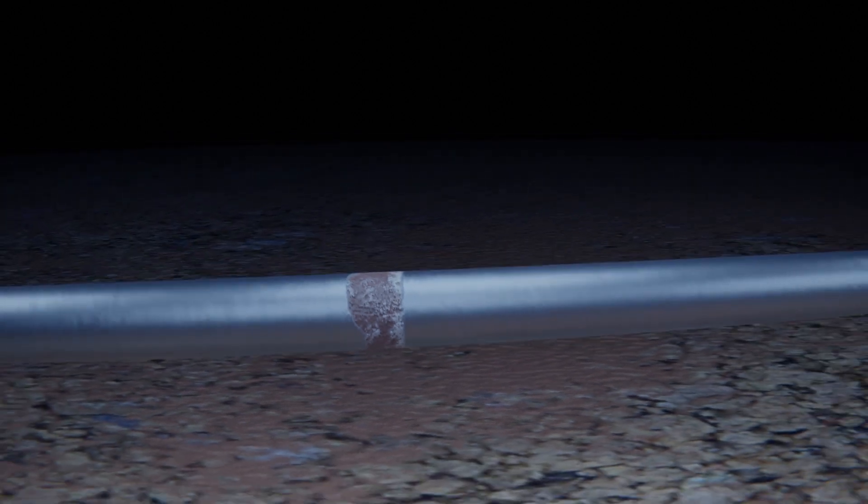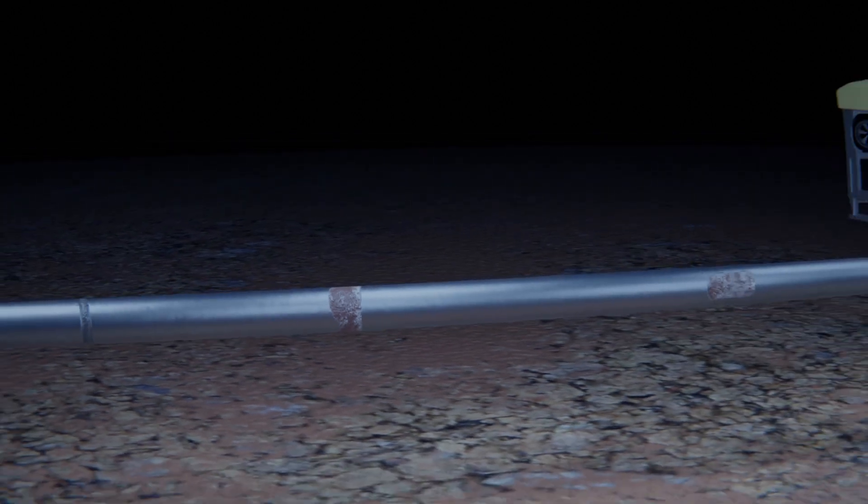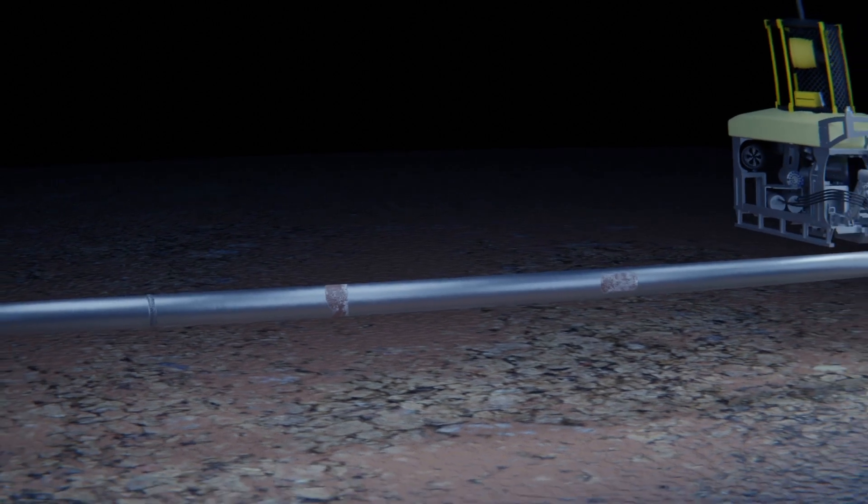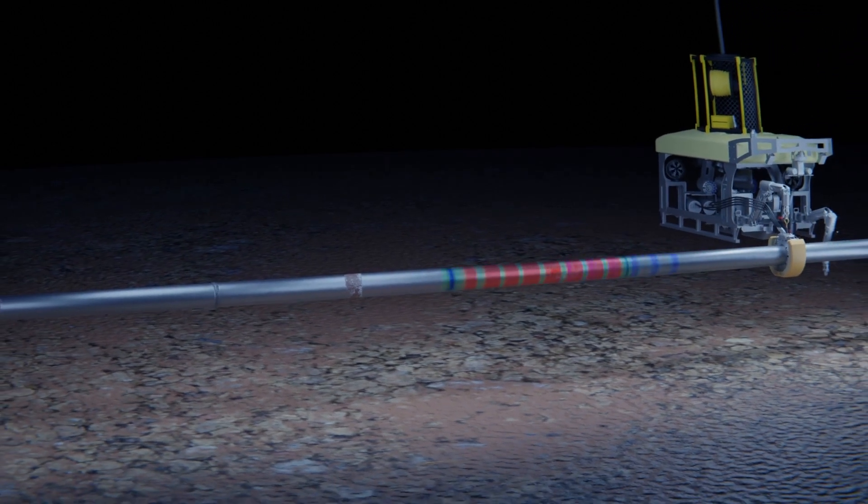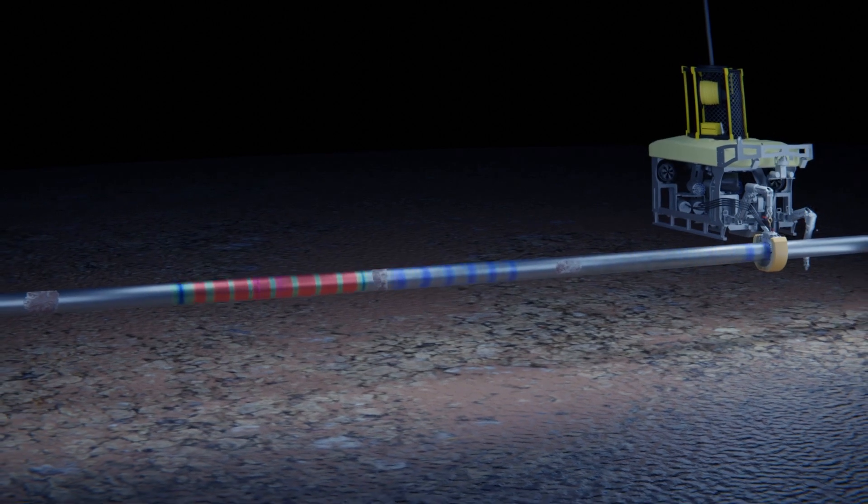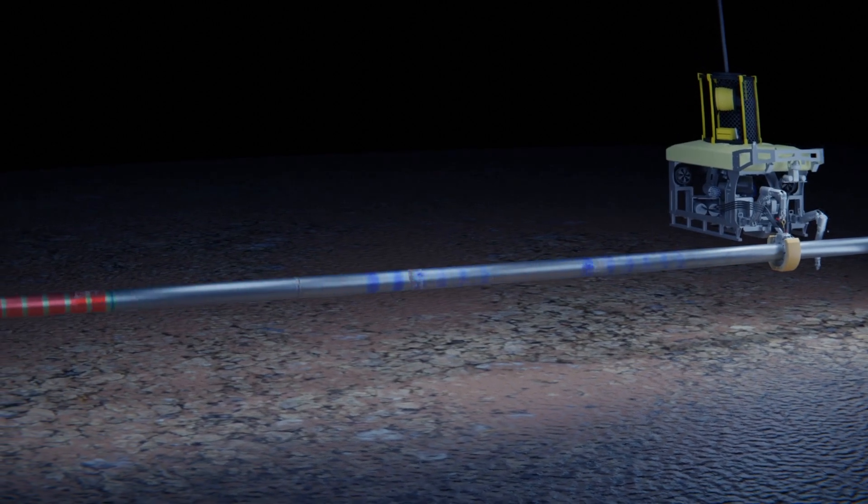VERN's clamp uses long-range ultrasonic testing to locate flaws up to 100 meters at either side of the inspection tool. This means it can accurately detect wall thickness loss on both internal and external surfaces over a 200 meter range from inspection points.